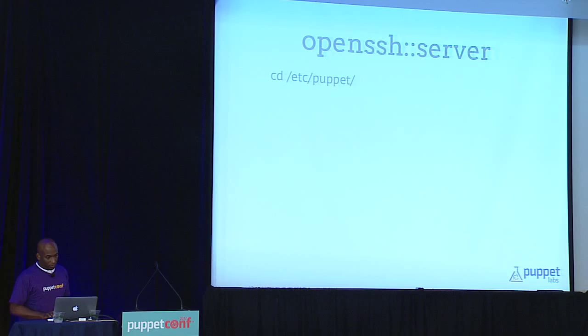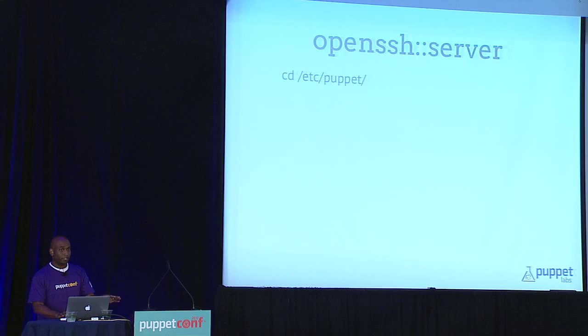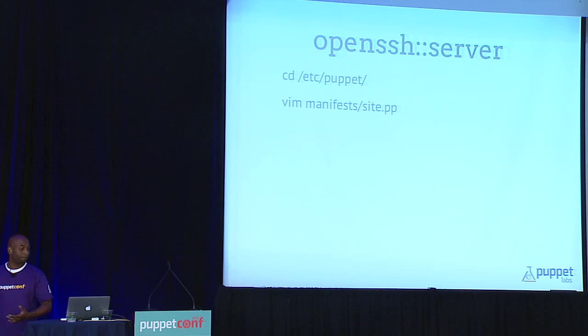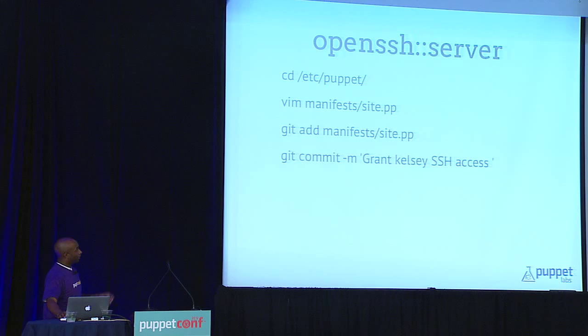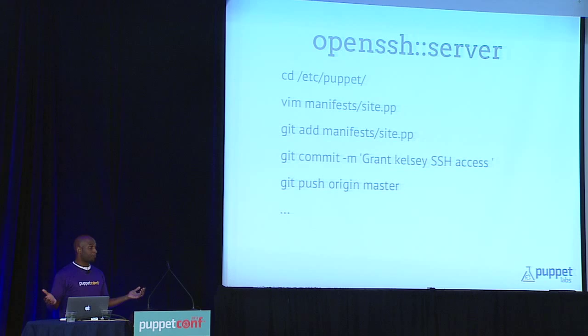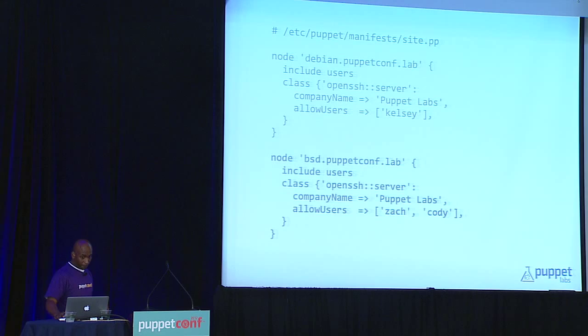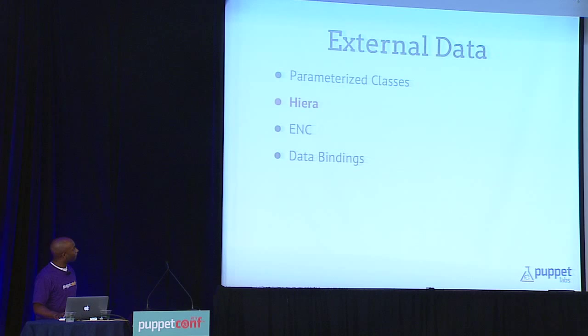Our new workflow is we go into /etc/puppet where our configuration lives, staying out of the module path. Now we just edit our site.pp, which is one of the built-in node terminuses where you can classify things. We make our changes, commit it, and we avoid all the merge conflicts with the module — especially if you're using modules from the Forge, you don't want to start manipulating them because it will be hard to upgrade in the future. Keep them in separate repositories. Try not to commit all your code and your data in the same repository because it defeats the purpose. You may even have different versions and release dates for your data and your module code.